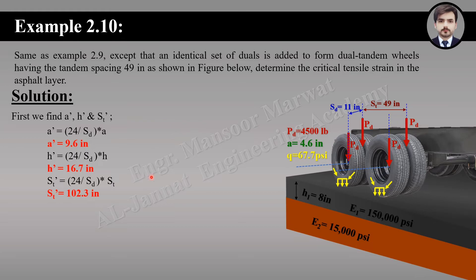From the previous example, a-dash equals 9.6 inches and H-dash equals 16.7 inches. The modified tandem spacing S_T-dash equals 102.3 inches. We need to find conversion factor C for S_T-dash equals 102.3 inches. However, figures 2.25, 2.26, and 2.27 only cover S_T of 24, 48, and 72 inches, and 102.3 exceeds 72 inches, so we must interpolate.